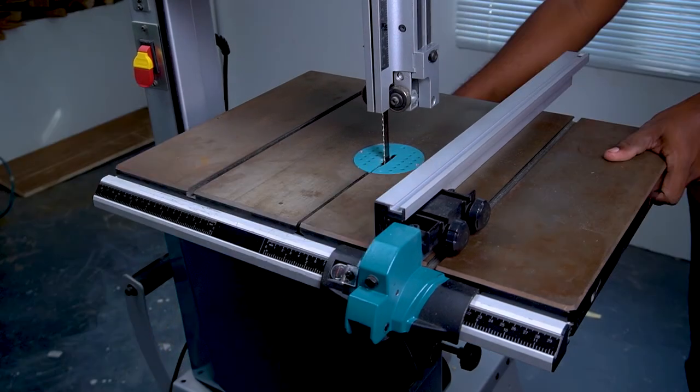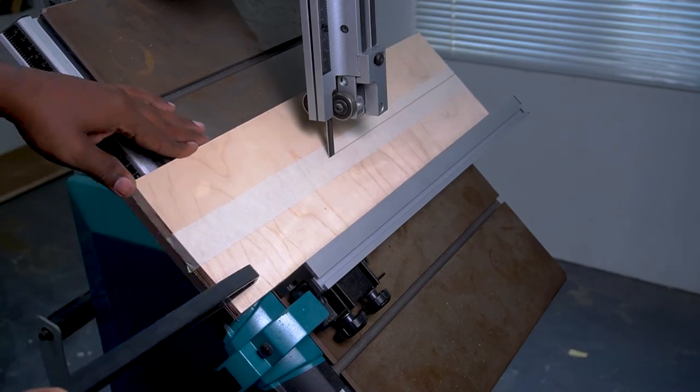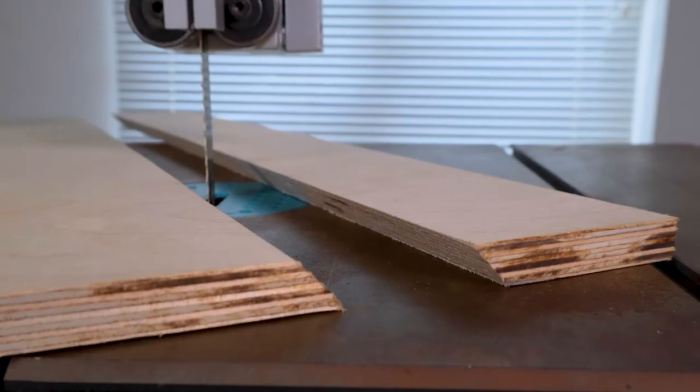Remember to set the fence on the side that's lower. Tilt the bed of the band saw to 45 degrees. Turn on the bandsaw and slowly slide the wood onto the bandsaw blade. With this the French cleat is made.